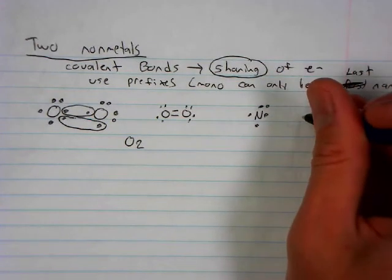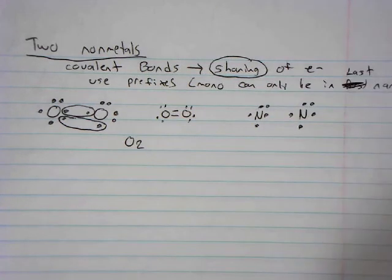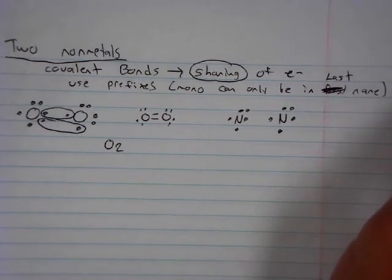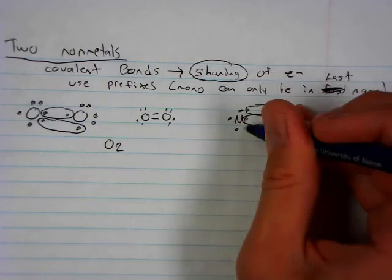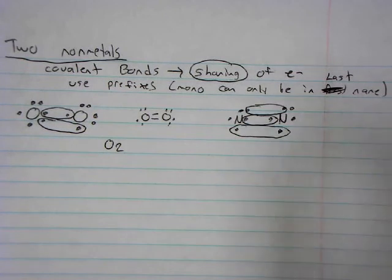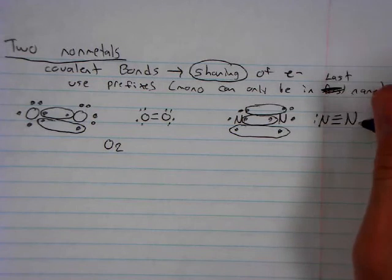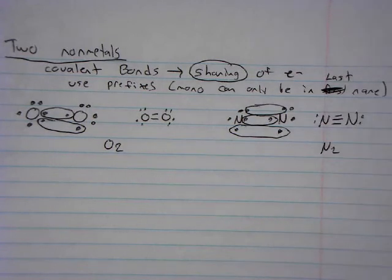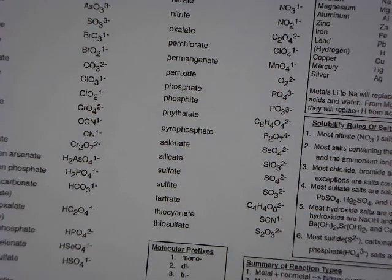Nitrogen is a little different. Nitrogen has 1 2 3 4 5, 5 valence electrons. So if I have 2 nitrogens 1 2 3 4 5. Nitrogen going to share a pair here, going to share a pair here, and share a pair here. It wants to share 3 pairs. So this is a triple bond with 1 lone pair on each and that is N2.